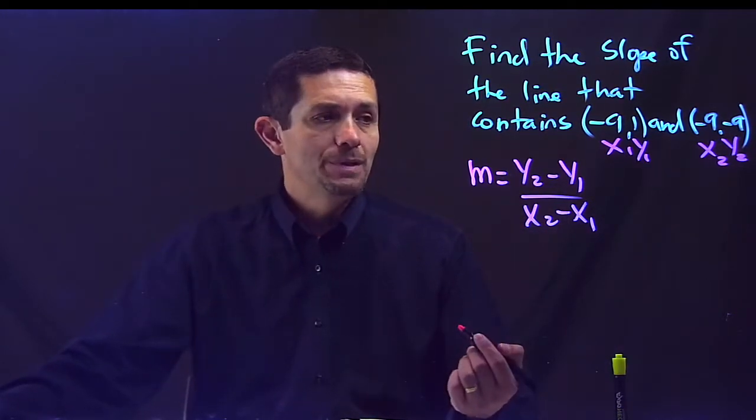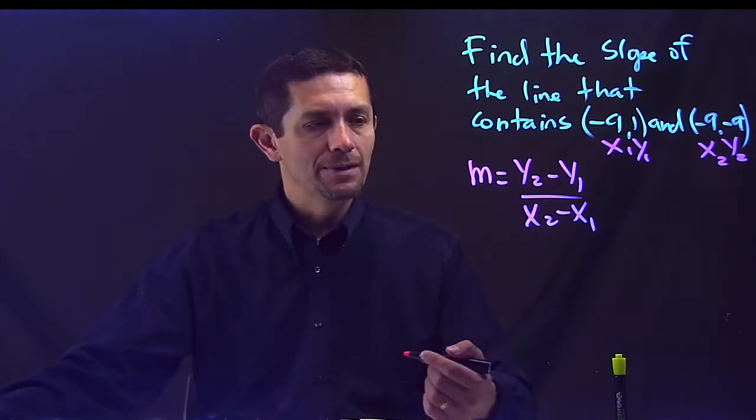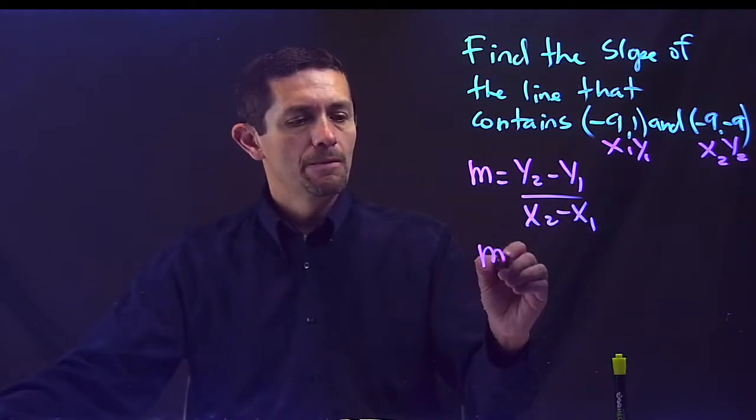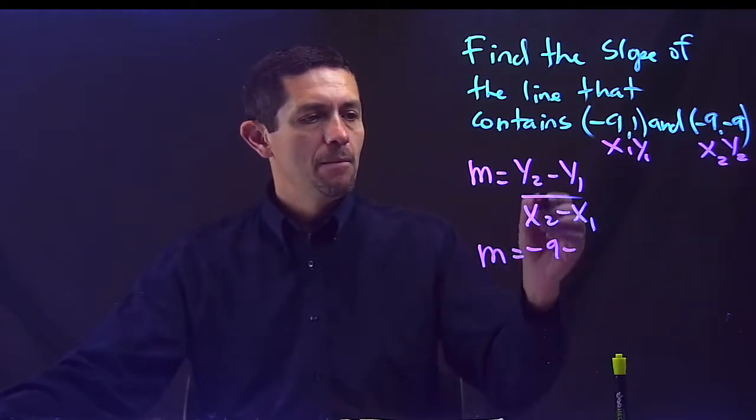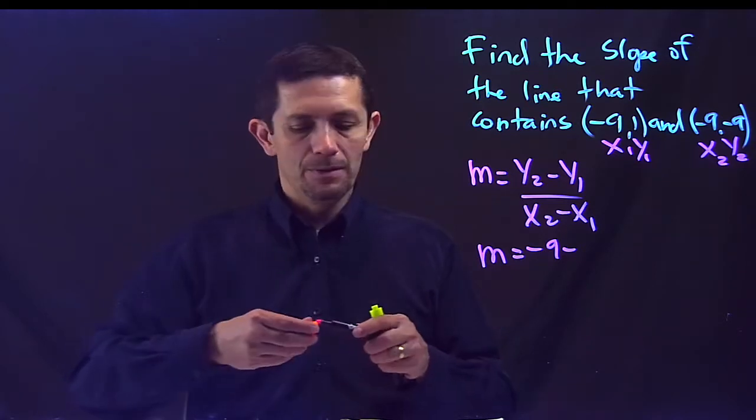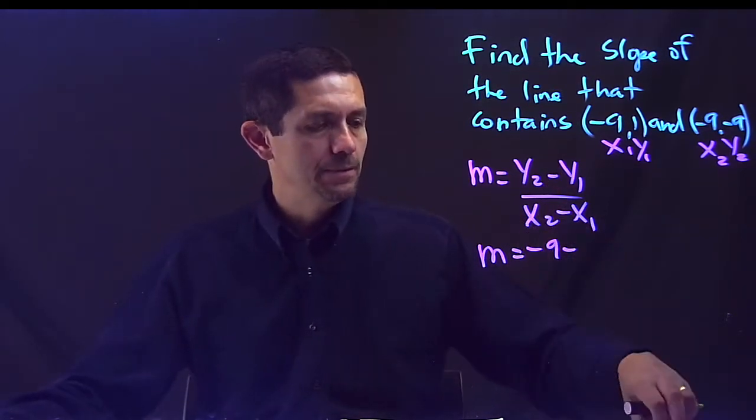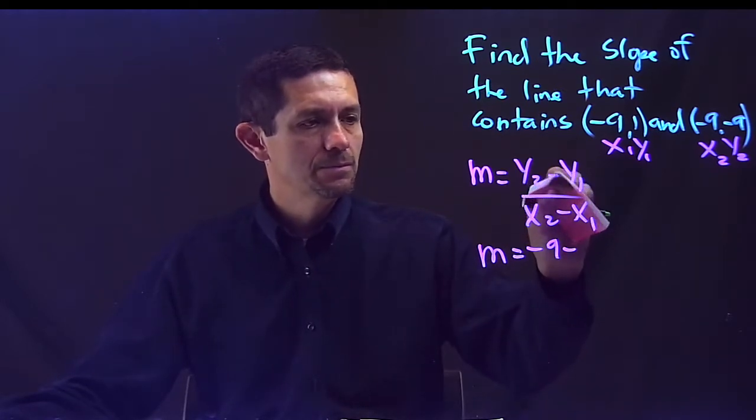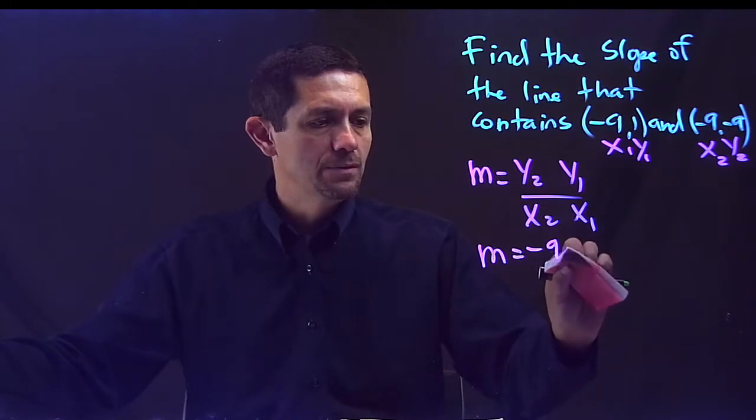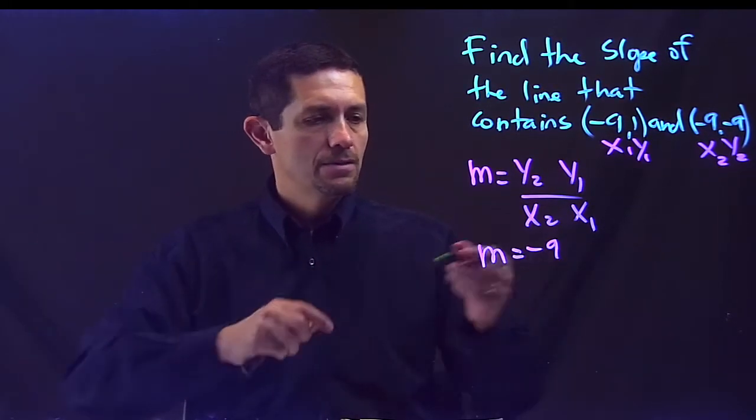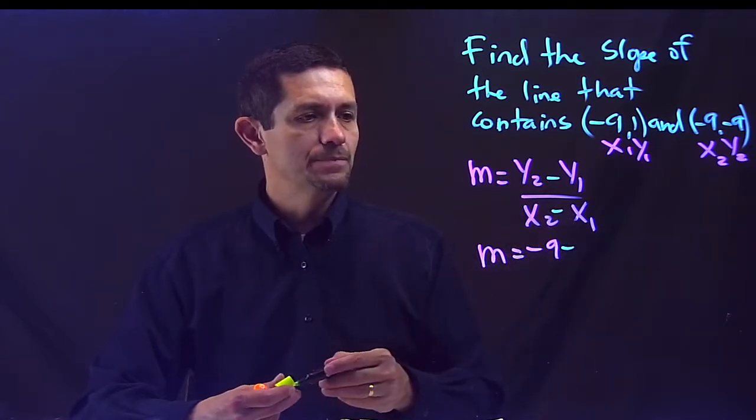From now I just basically plug it back in, being careful with the signs. So slope equals y2, y2 is negative 9, minus, and I want to make an emphasis on the minuses because this is where the trick is. Let me erase those minuses and do it in a different color. I'm going to do it in green. This minus is that minus.